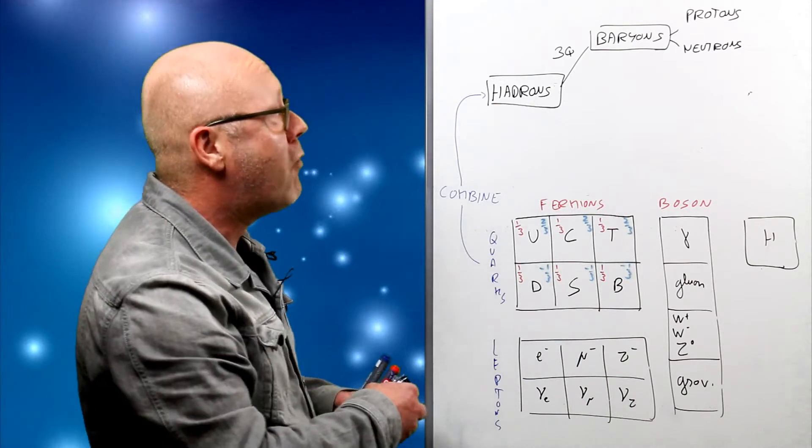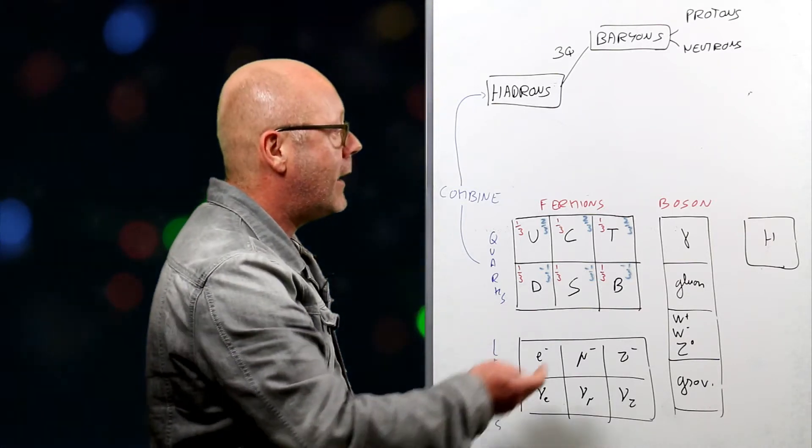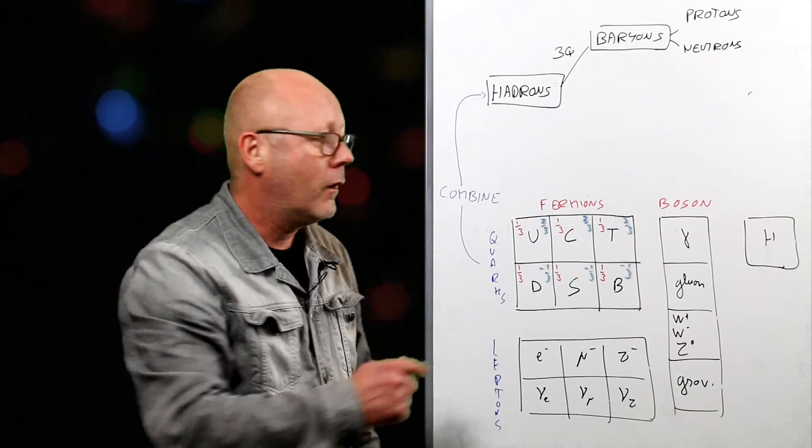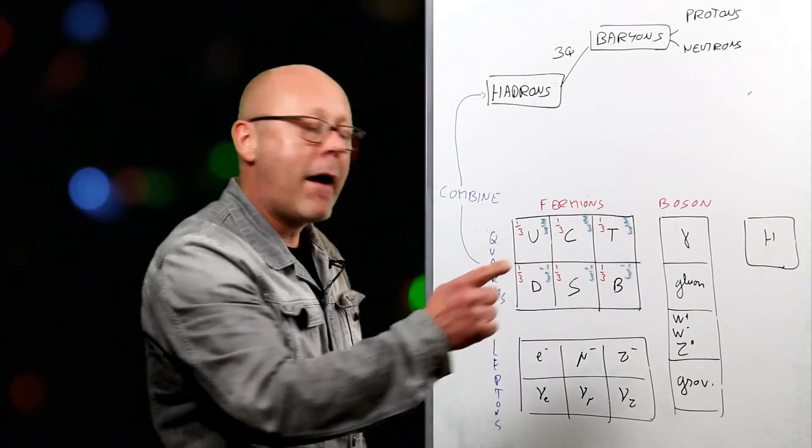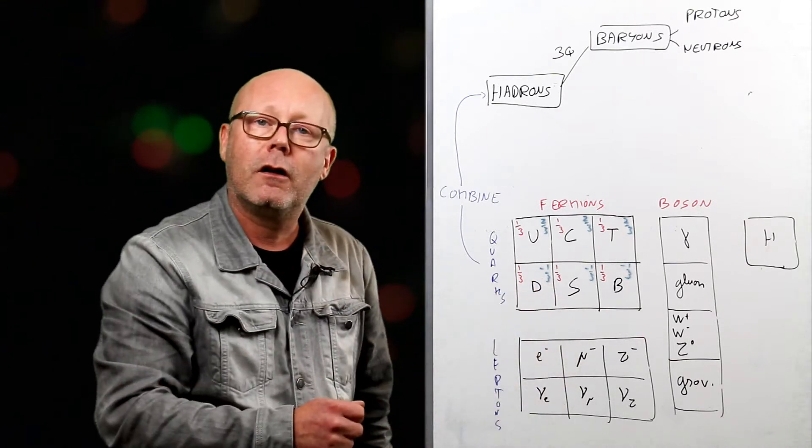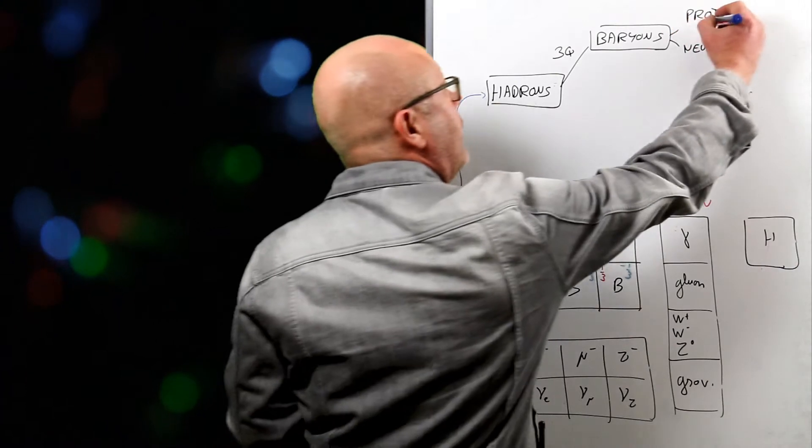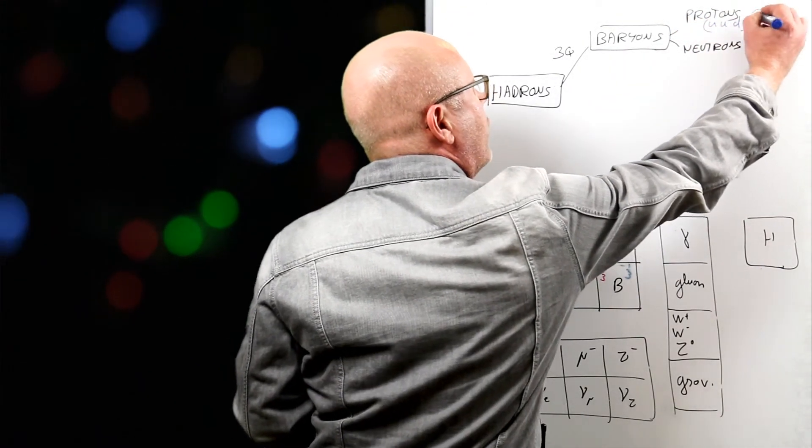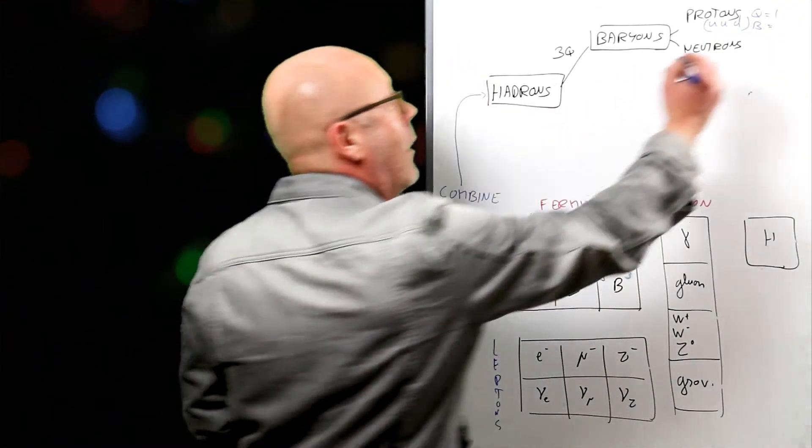For instance, a proton. It's got a charge of plus one, meaning it's made of two ups and one down. Two thirds of charge plus two thirds of charge minus one third of charge, giving you a charge of one. So a proton is up, up, down. It's got a charge of one and a baryon number of one third by three, one.